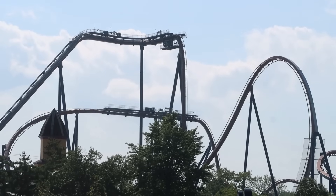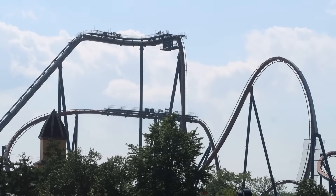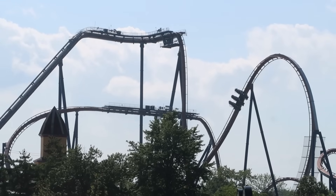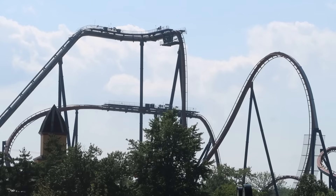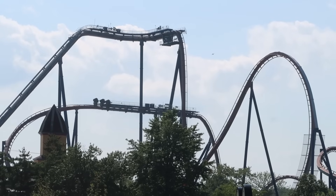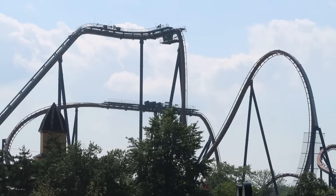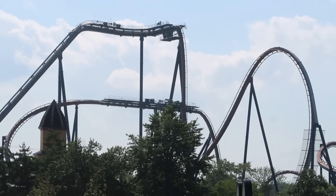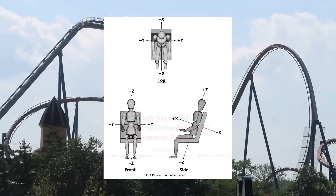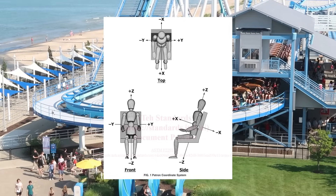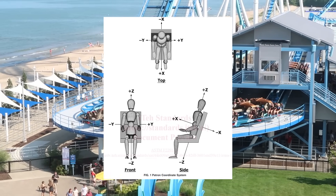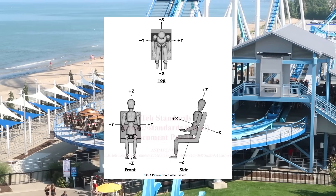Starting with restraint design. Restraints are broken into five different areas by ASTM based on the g-forces riders will experience on the ride. It's important to remember that g-forces are just a measure of acceleration, and so for simplicity, ASTM breaks the different axes riders will be exposed to g-forces into X, Y, and Z — X being forwards and backwards relative to a rider's eyes, Y being left and right, and Z being up and down relative to a rider's eyes.